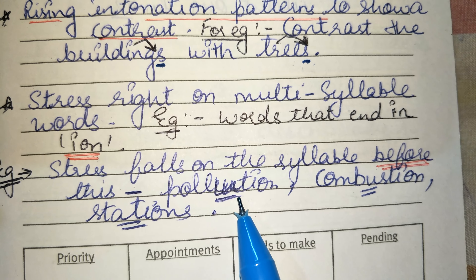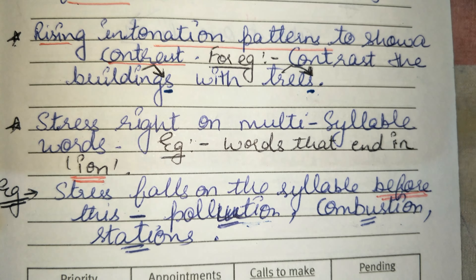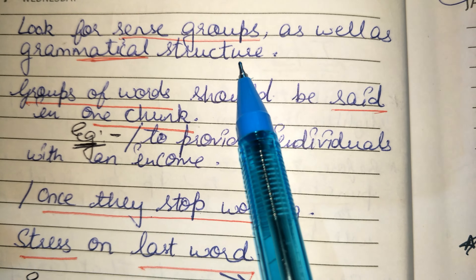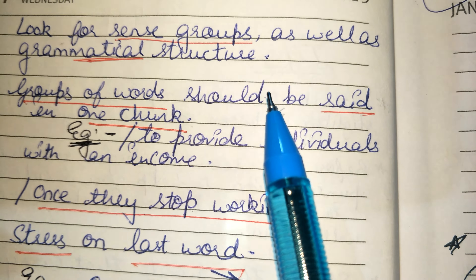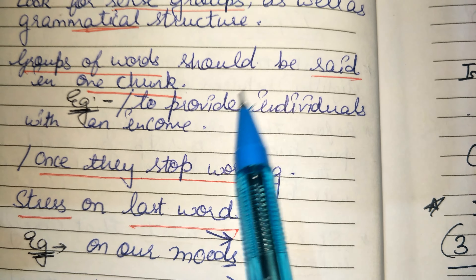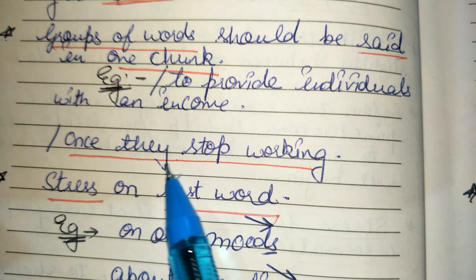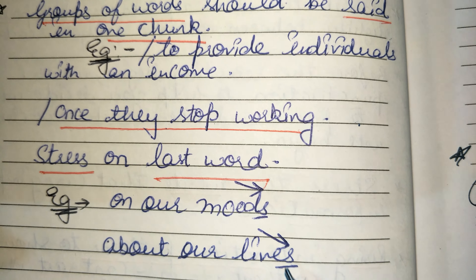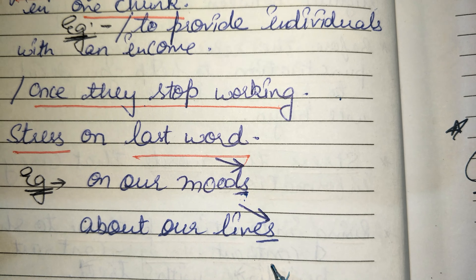Then, stress the right syllable in multi-syllable words — those longer words where we need to identify which syllable carries the stress. Also, look for sense groups and grammatical structure. For example, the word 'honest' — before it we use 'an,' so we say 'an honest person' without pausing between them. Groups of words that belong together should be said as one chunk, spoken together smoothly.